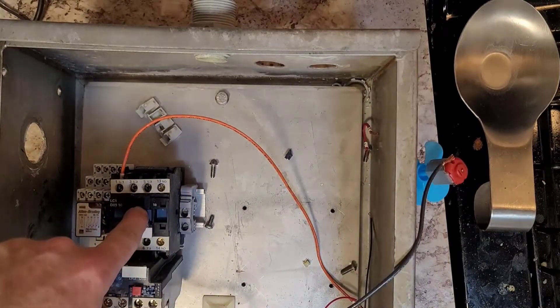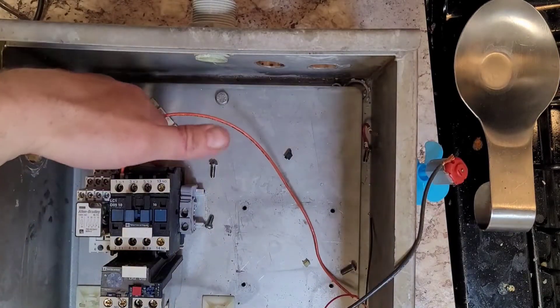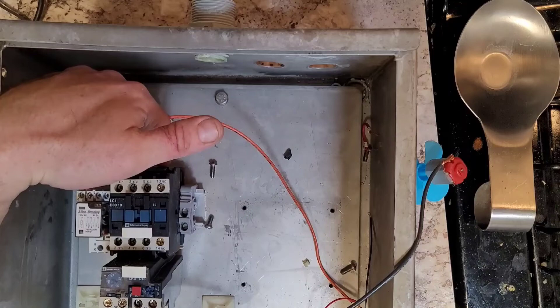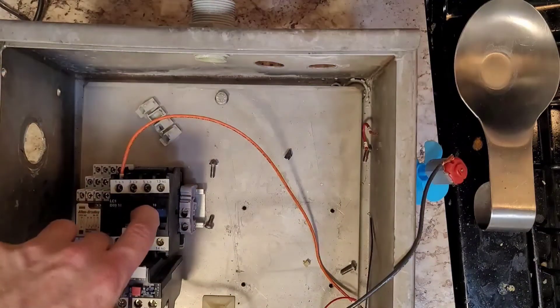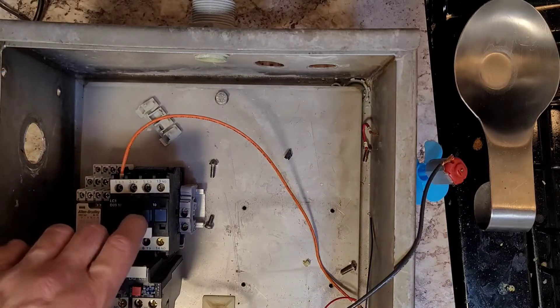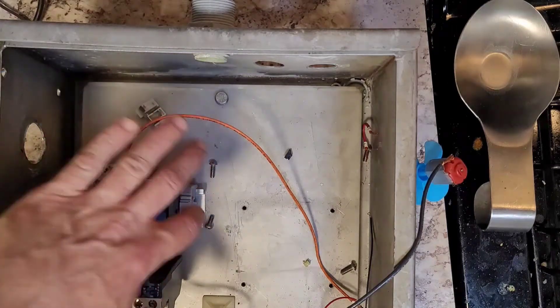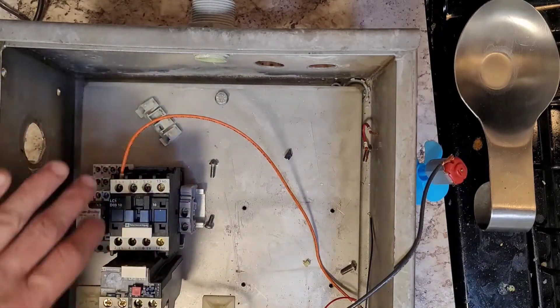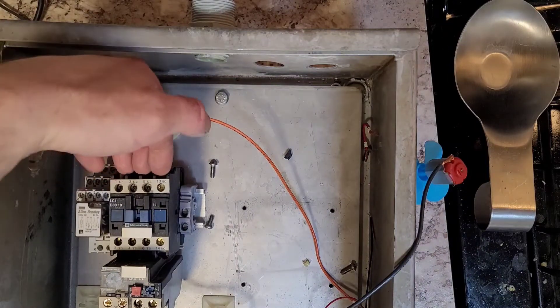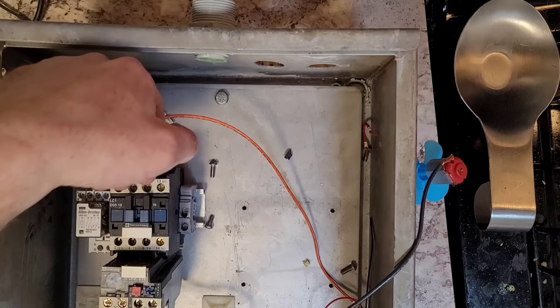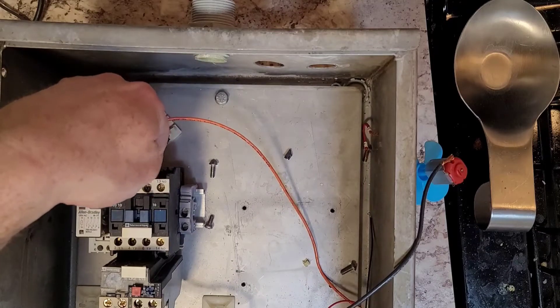This right here is the coil of our motor starter. This is a motor starter, also called a contactor. You energize the magnetic coil at A1 and A2, and when you do that it pulls in. When this pulls in, there's a set of metal contacts that closes L1, L2, and L3.